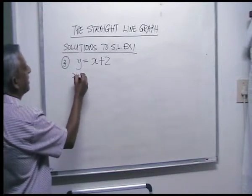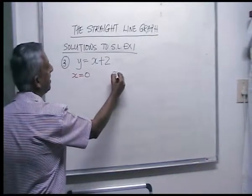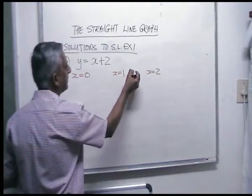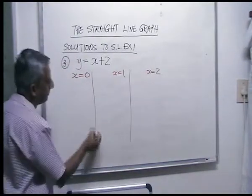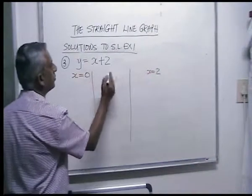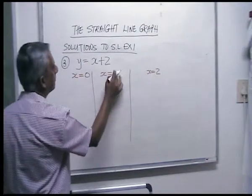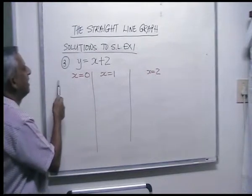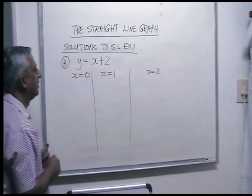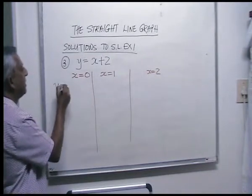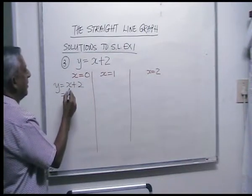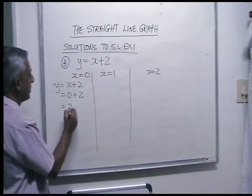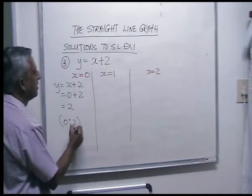For number three, y is equal to x plus two. Let's say x is zero, x is one, x is two. For x is zero: zero plus two is two. Your first ordered pair is zero, two.